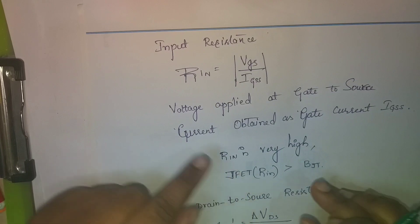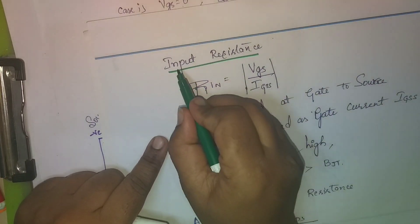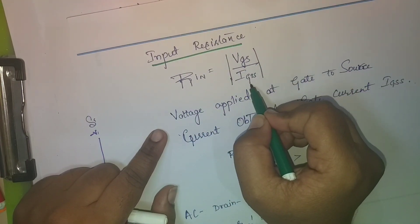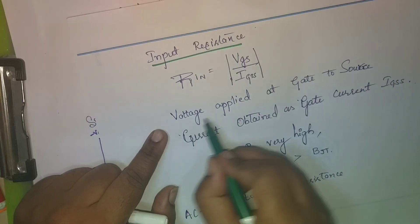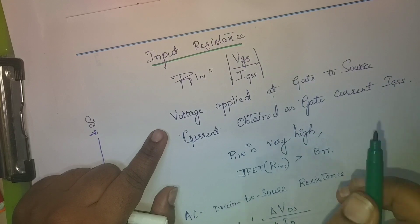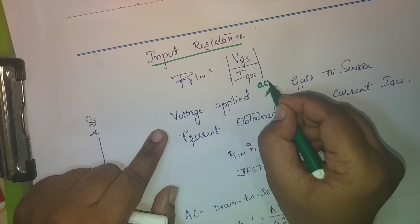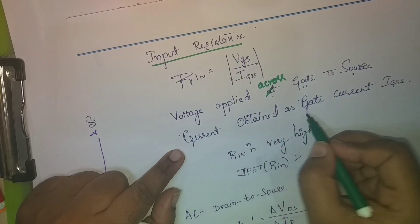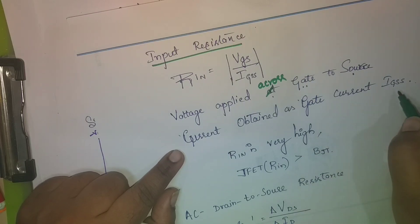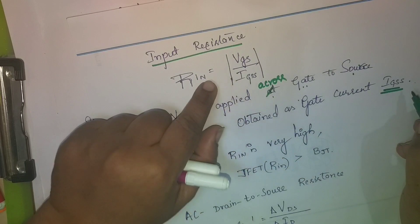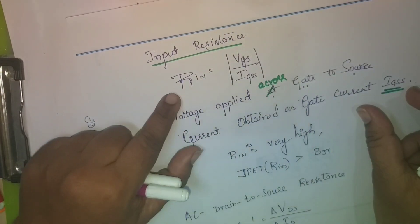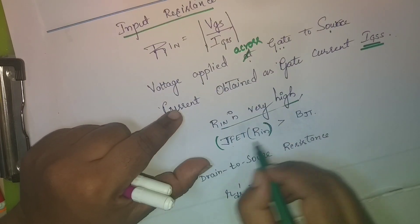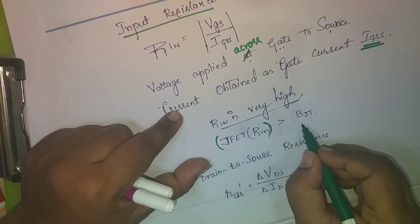The next parameter is input resistance. Input resistance is defined as Rin = Vgs / Igss — it is the ratio of the applied voltage across gate to source, to the gate current Igss obtained at the gate. This ratio is called input resistance. Input resistance for JFET is very high, even greater than that of a BJT (bipolar junction transistor).